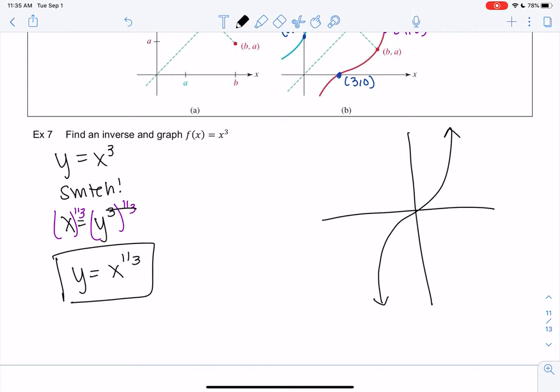We could try to graph it, but it's hard to see the reflection, so one thing I like to do is make tables. Let's find some points on x³. We have 0, 1, 2, and 3. This is on x³, and then we'll jump to the cube root.